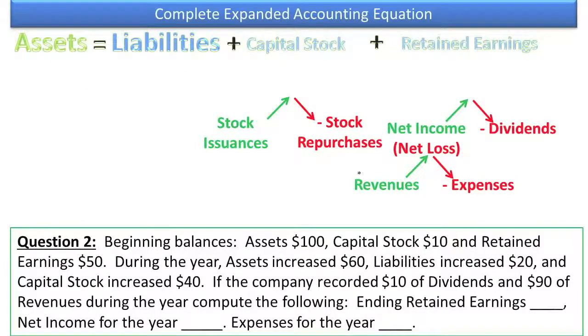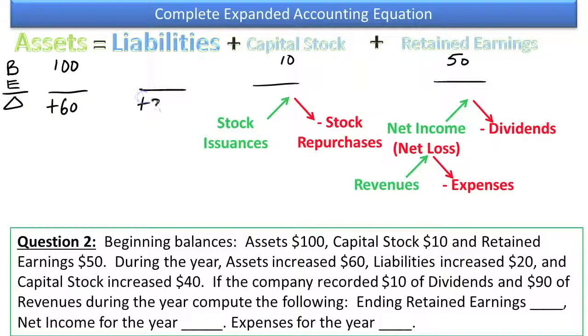Let's go to question two. Beginning balances were assets of $100. So I'm going to put my beginning and my ending and my change here for each of these accounts. I will put in the information given: $100 beginning assets, Capital stock had a beginning balance of $10, Retained earnings had a beginning balance of $50. During the year, assets increased by $60, Liabilities increased by $20, and capital stock increased by $40. If the company recorded $10 of dividends and $90 of revenues during the year, compute the following.